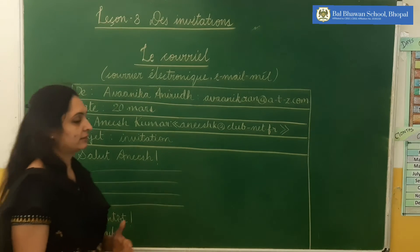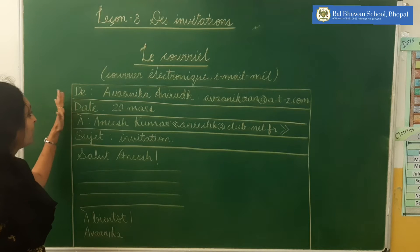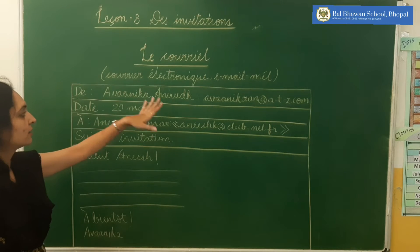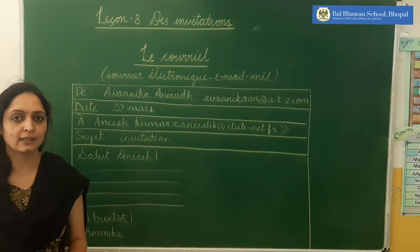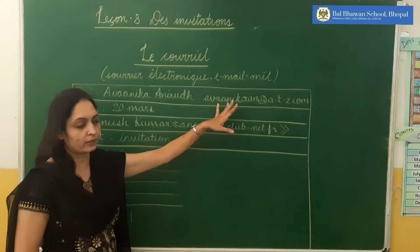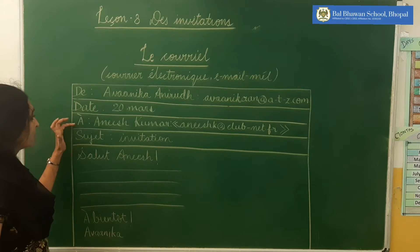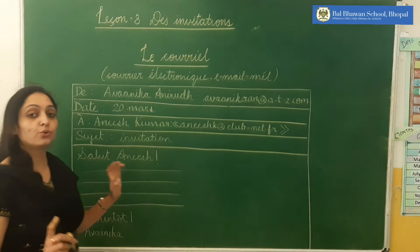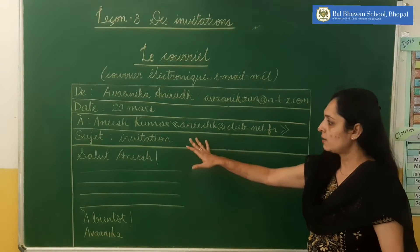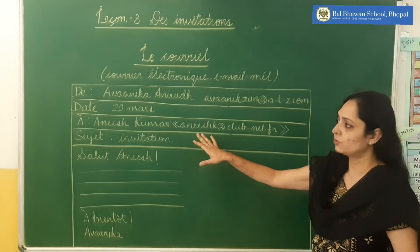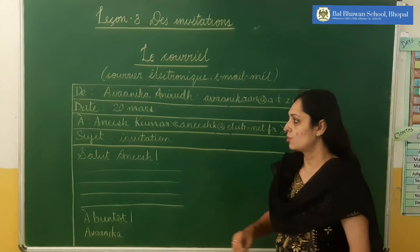But how do you do it in French? When you open your site — like a Gmail account or whatever you are using — the heading will come. We will write the name or email of the person who is writing. For example, if I am writing a letter to you, my email address will come here. Then the date, then 'À' — meaning 'to' — the name or email ID of that person. Here we have Anish Kumar, and the email address of Anish is shown.